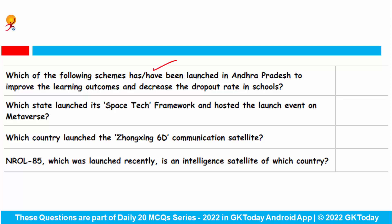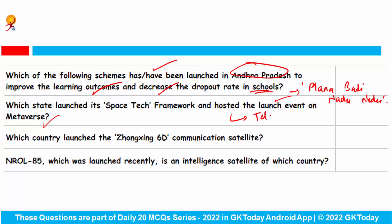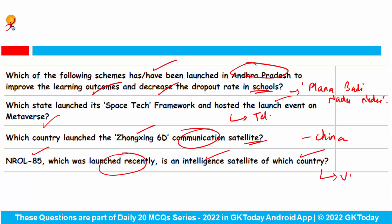Which scheme has been launched in Andhra Pradesh to improve learning outcomes and decrease the dropout rate in schools? The answer is Manabadi Nadu Nedu. Which state launched its space tech framework and hosted the launch event on Metaverse? This is Telangana. Which country launched the Zhongxing-16 communication satellite? The answer is China. NROL-85, which was launched recently, is an intelligence satellite of which country? This is the satellite of the USA.